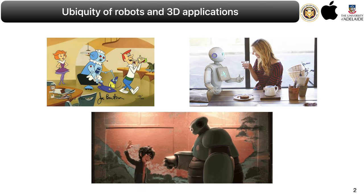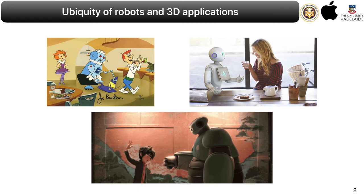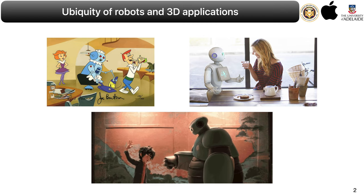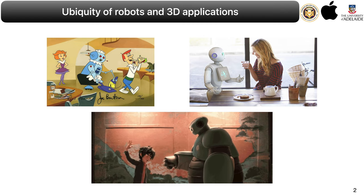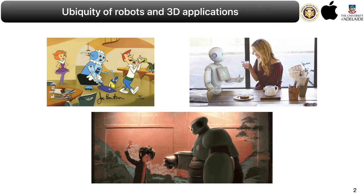Any autonomous agent we develop must perceive and act in a 3D world. Therefore, the ability to infer, model, and utilize 3D representations is of central importance in AI, with applications ranging from robotic manipulation and self-driving cars to virtual reality and image manipulation.